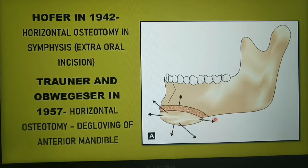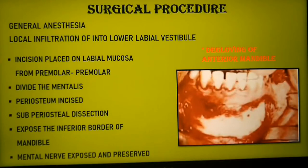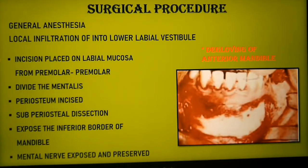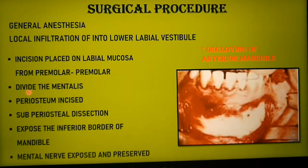Genioplasty is usually performed under general anesthesia. Once the patient is positioned, local anesthetic solution is infiltrated into the lower labial vestibule. Incision is then placed on the lower labial mucosa approximately halfway between the depth of the vestibule and the wet-dry line of the lip, extending to the premolar region on both sides. Once the mucosal incision is completed, the mentalis muscle is divided and the incision is deepened till the periosteum.